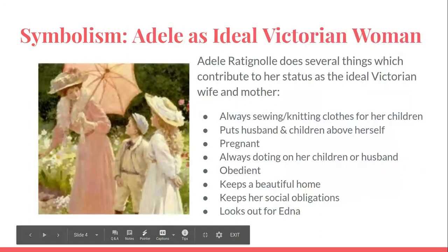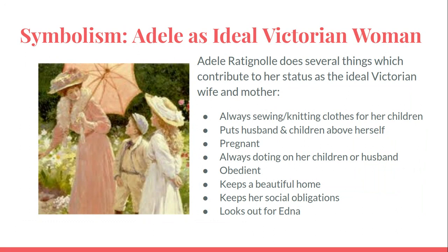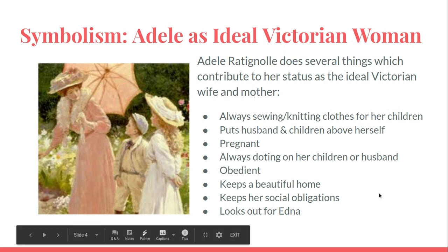Taking a closer look at Adele, we can see that she does lots of things that make her the ideal Victorian wife and mother. She's always sewing or knitting clothes for her children. She puts her husband and her children above herself. She's pregnant during the novel, which isn't mentioned a lot because it wasn't really openly discussed in Victorian times. She's always doting on her children — like the epitome of a helicopter parent. She's also really obedient, keeps a beautiful home, maintains her social obligations, and looks out for Edna. She is the ideal mother.